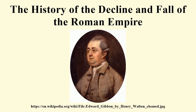Gibbon offers an explanation for the fall of the Roman Empire, a task made difficult by a lack of comprehensive written sources, though he was not the only historian to attempt the task. According to Gibbon, the Roman Empire succumbed to barbarian invasions in large part due to the gradual loss of civic virtue among its citizens. They had become weak, outsourcing their duty to defend their empire to barbarian mercenaries,